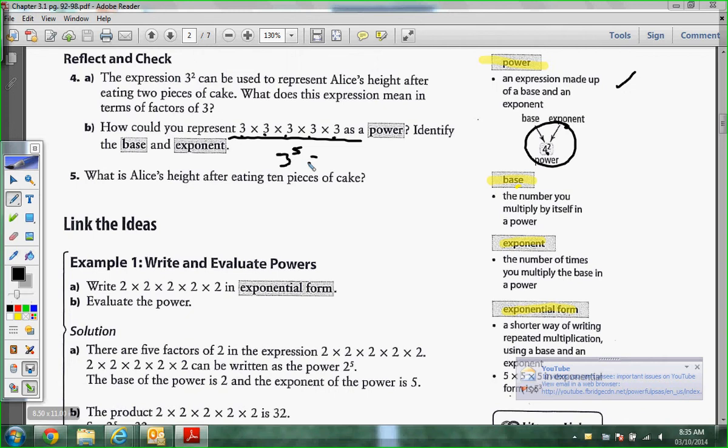I believe I do have a definition sheet that I will give you guys on Monday. For example, write 2 times 2 times 2 in exponential form. So there's 1, 2, 3, 4, 5. Five 2s, so it's 2 to the 5th.